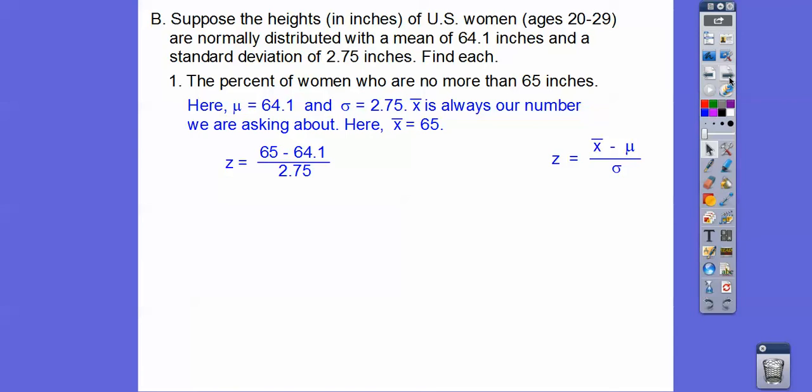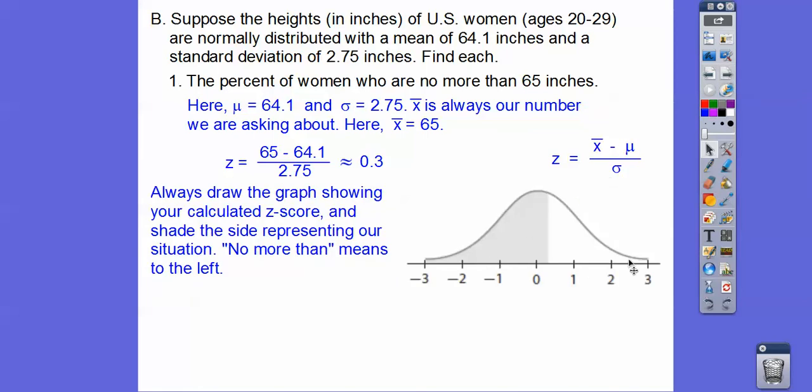So here we just plug all that in, and the x-bar is always the number that we're focusing on. So in this problem, it's 65. So we plug it in, and then we find a z-score, and it's like 0.32 something, but our table only gives us to the tenths. So we just round it to about 0.3, and then we look that up on our z-score table. Always make a graph. And then your graph always has one, two, three standard deviations to the right and to the left. And so about 0.3 is about right there. So that would be about the area, and it says no more than. So no more than means to the left.